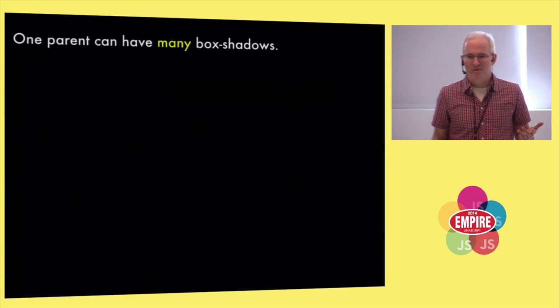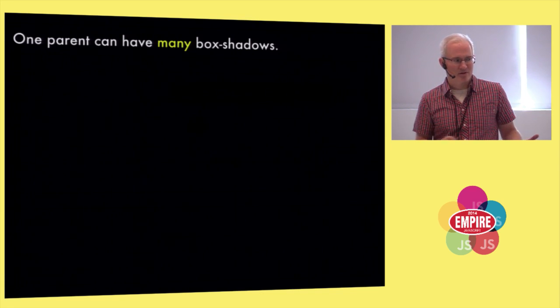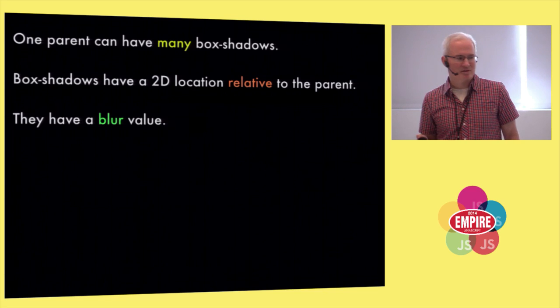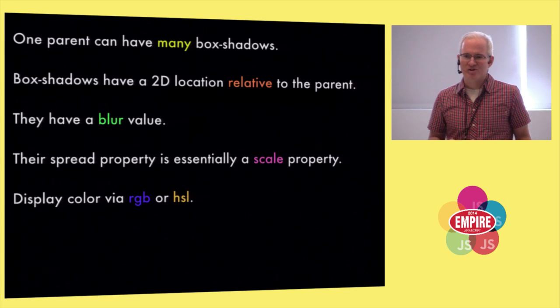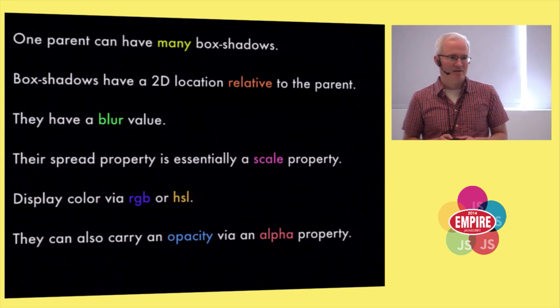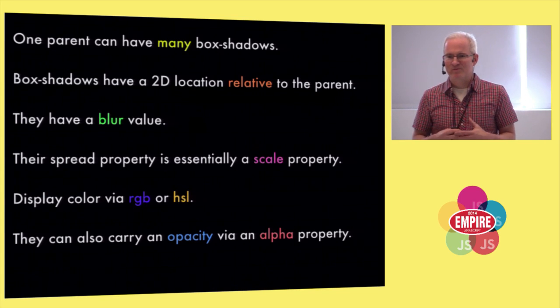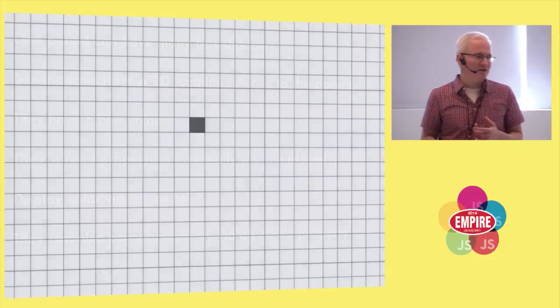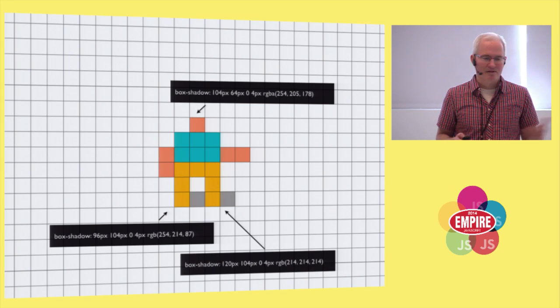Some other cool things: one parent can have n number of box shadows. That's really important if we want to actually create pixel art. Box shadows can have a 2D location relative to the parent. They also can have a blur value. Their scale property is basically their spread. They can have RGB or HSL hue, saturation and lightness. And they can carry an opacity via the alpha property in the color. So box shadows give me those four properties and even more. Then to create shapes, all you need to do is position my box shadows against my one parent.